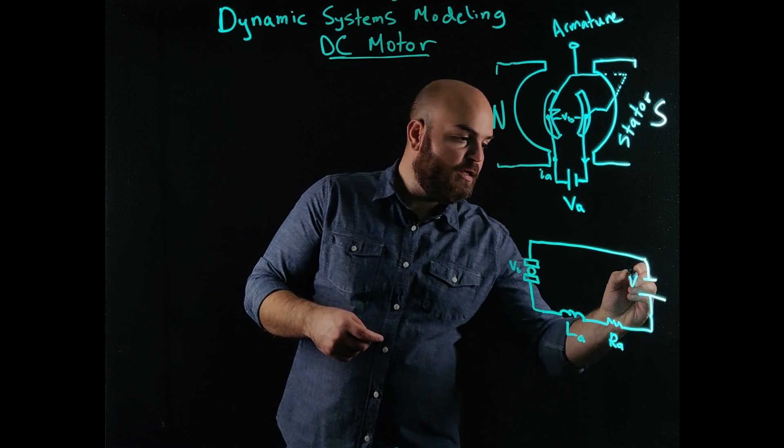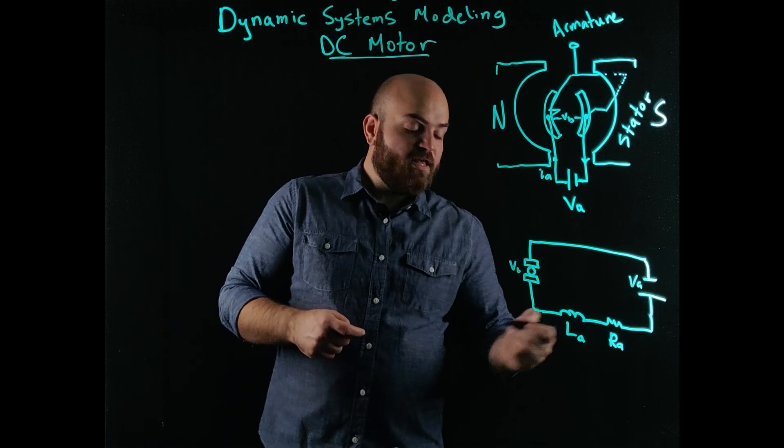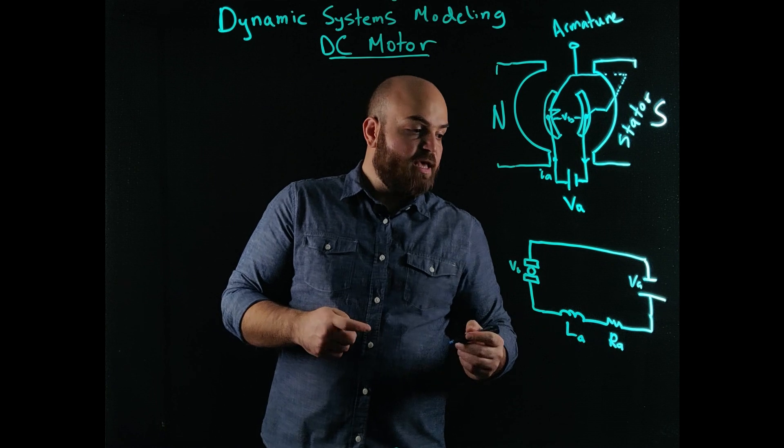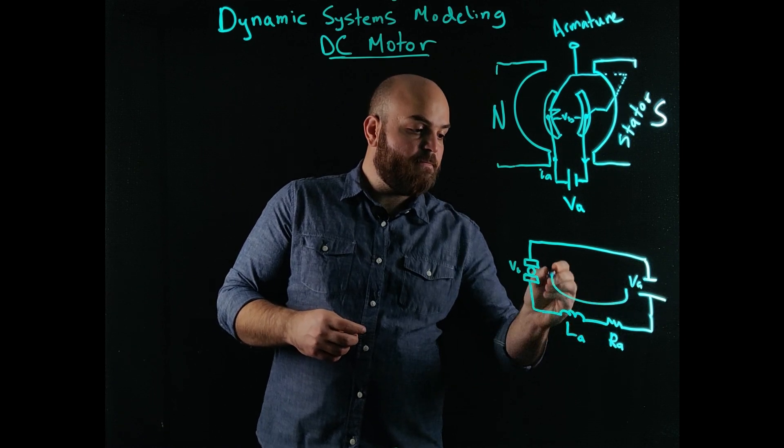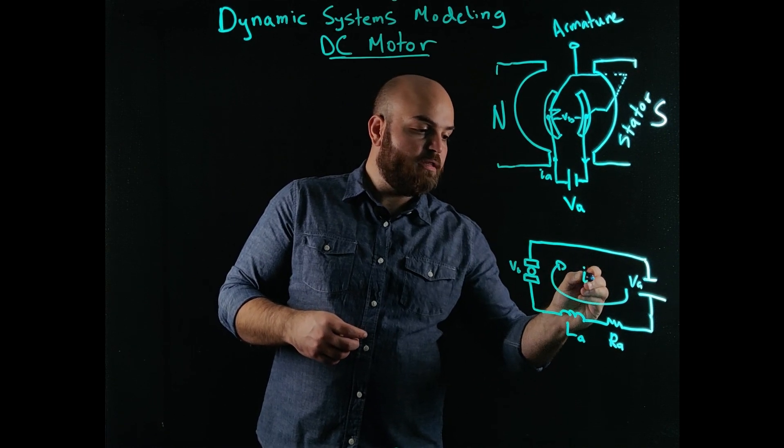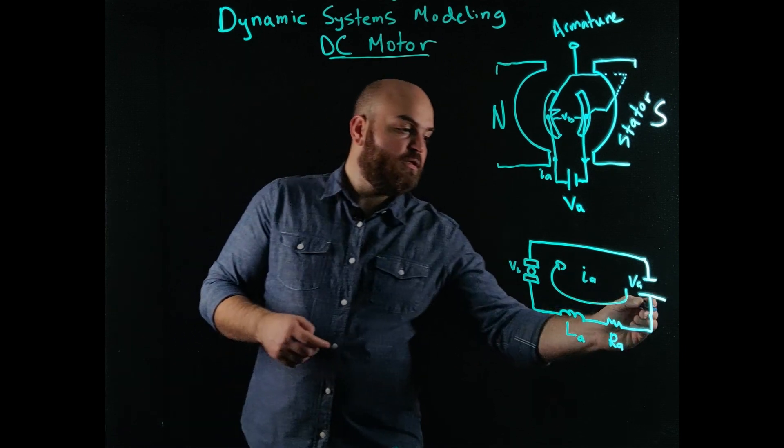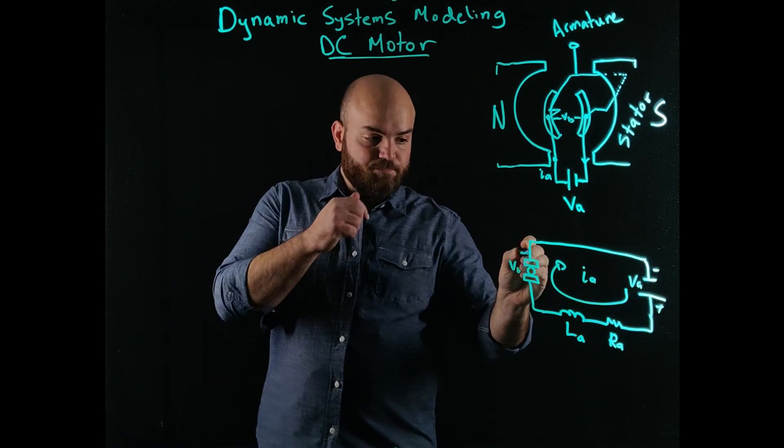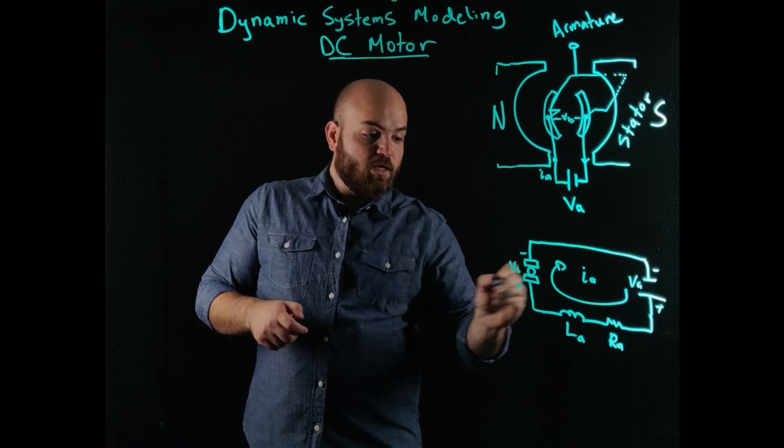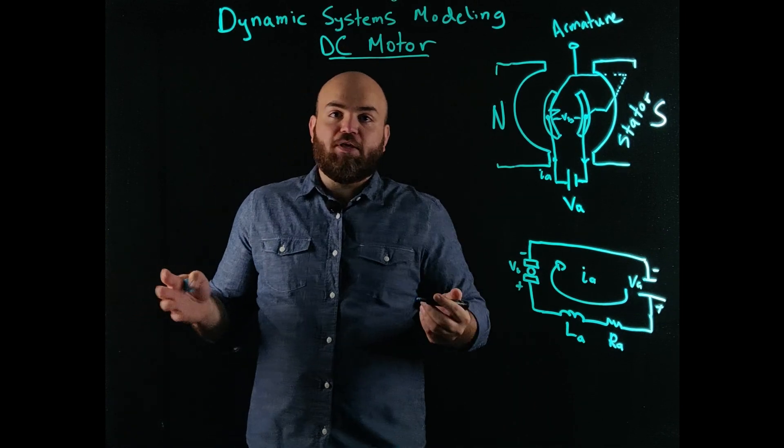So we have the armature voltage, the back EMF, the capacitance, and the resistance. And I have the current in the armature flows from positive to negative. Okay. Great. So now I have a circuit. What do I do with it?